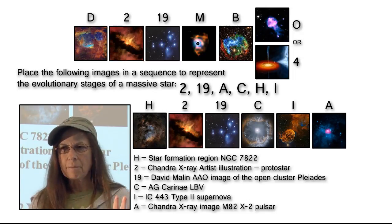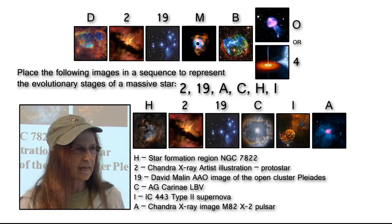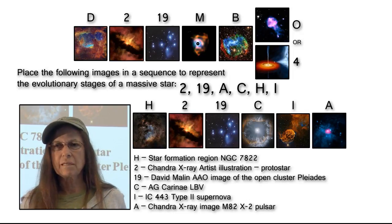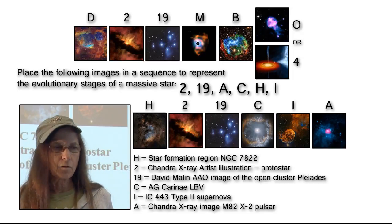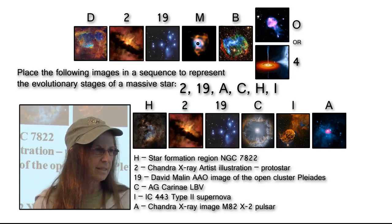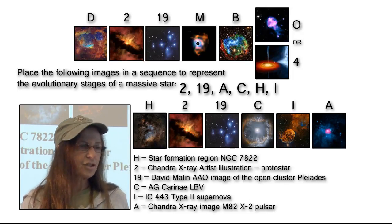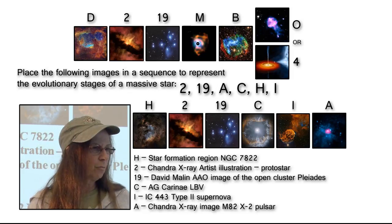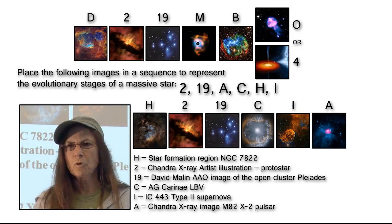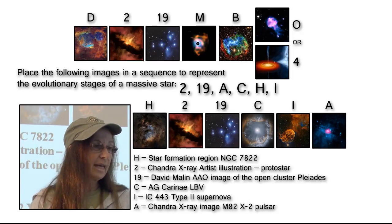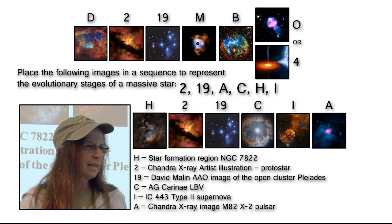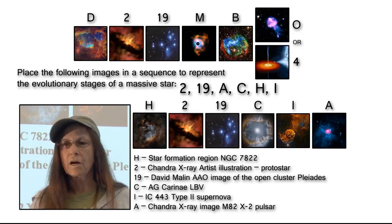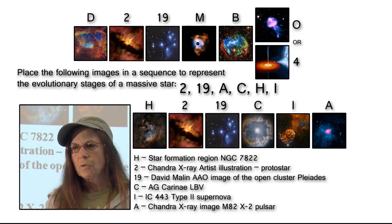We only have two numbered ones from the basic card set — everything else is from the deep sky objects. We could use this year's deep sky objects to put together almost everything; any missing stage can be gleaned from the stellar evolution basic card set. Here we have our star formation region, AG Car which is a luminous blue variable hypermassive star, a type 2 supernova, and the pulsar in M82X2.